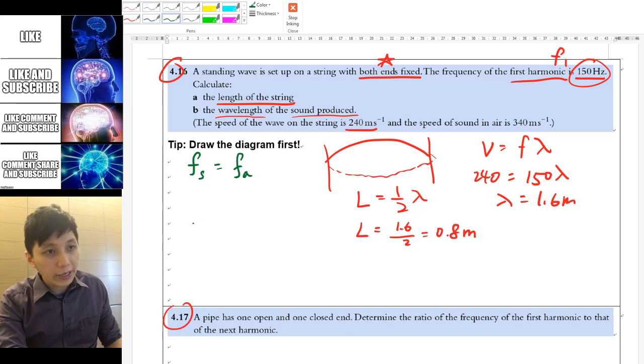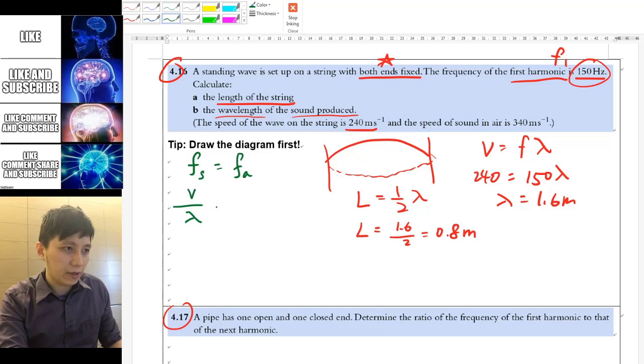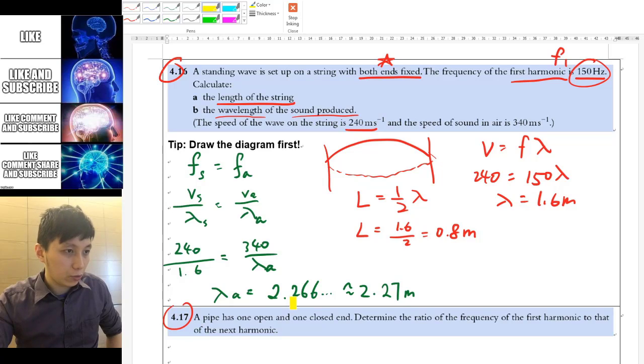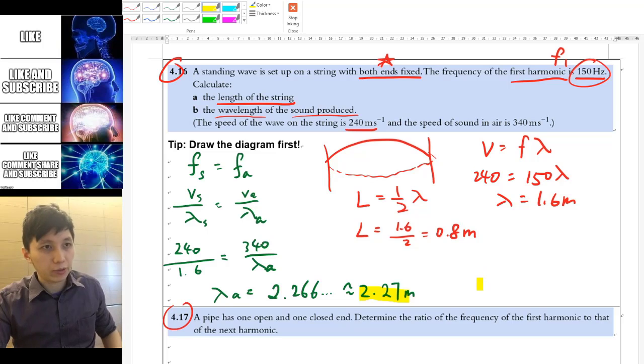And then you can use the wave equation, which is by rearranging this, that's going to be V over lambda for each of them, string and air. And so after substituting all these things, you'll be able to find the answer to be 2.26666 recurrent. And so I'll round up to 3 sig figs, so 2.27 meters.